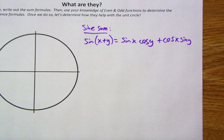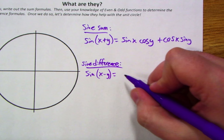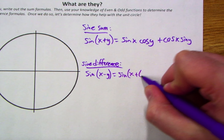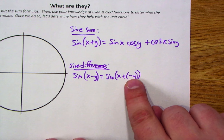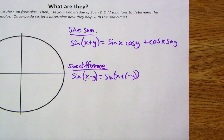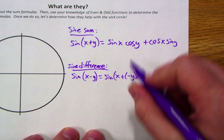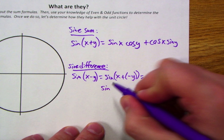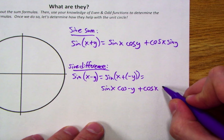To develop the sine difference formula, all we're going to do is take that rule and modify which input is positive and which is negative so that we're effectively making subtraction. Sine of x minus y — let's treat this as sine of x plus a negative y. By doing so, we're back to our sine sum formula with a changed input. Sine of x plus negative y is the same as sine of x cosine of negative y plus cosine of x sine of negative y.